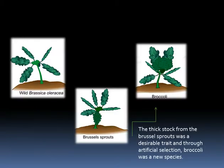One example of this is the Brussels sprouts. The thick stock from the Brussels sprouts was a desirable trait, and through artificial selection, broccoli was a new species created.